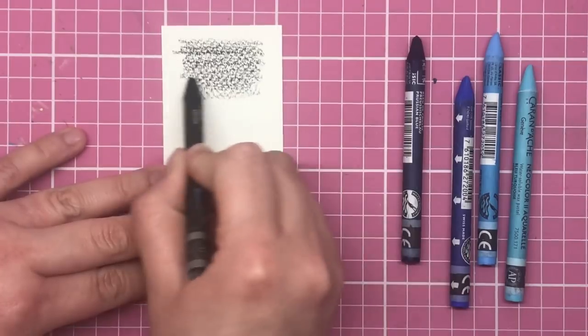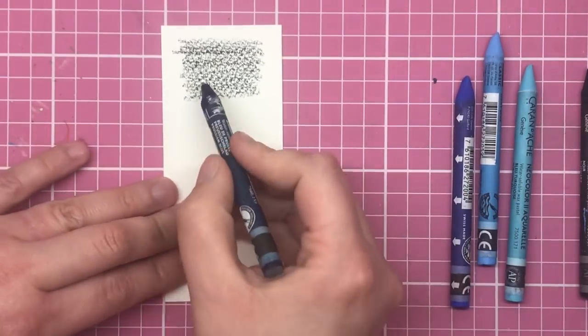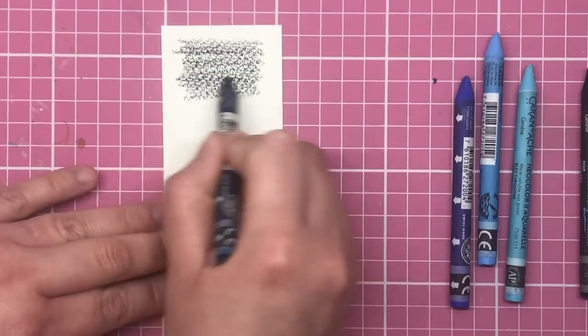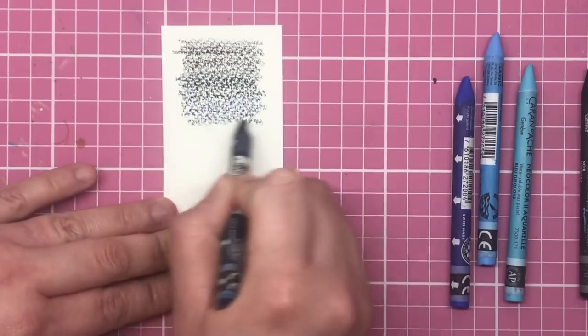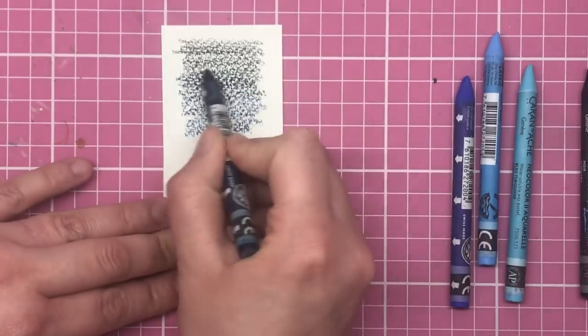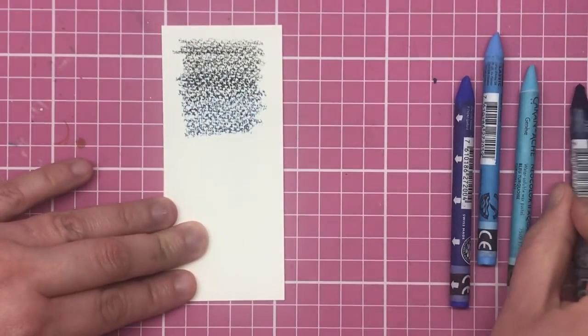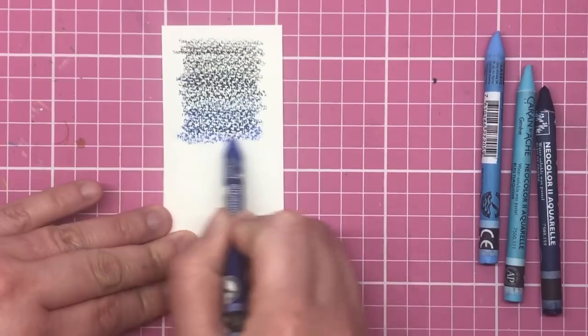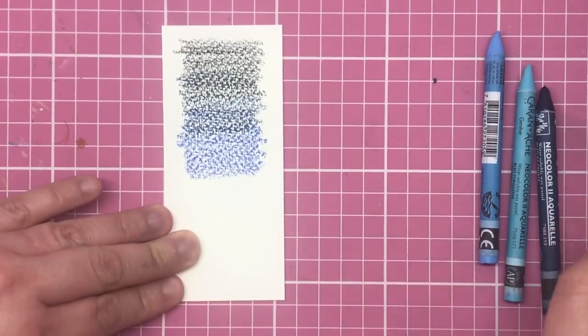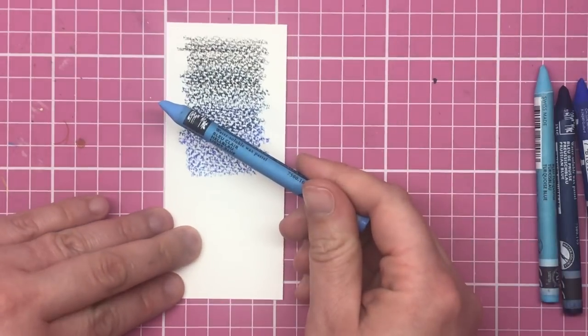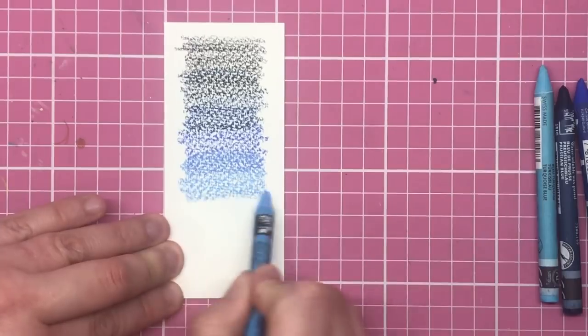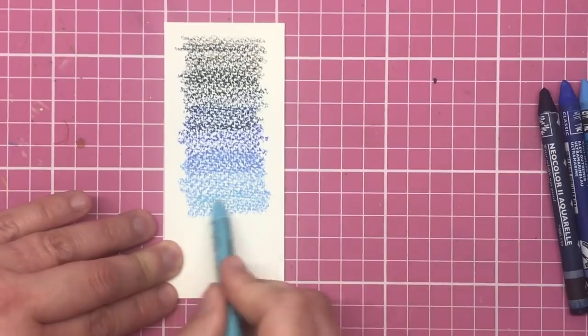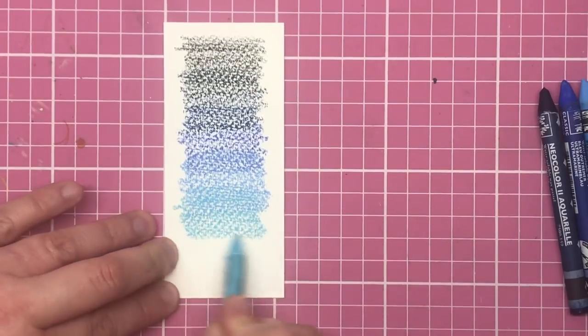I do a layer of black first of all at the top of the page, then move on to the next darkest color which is the Prussian blue and start from kind of the mid three-quarter point of the black and pop the Prussian blue on there. You're overlapping, that will help with the blend. Then the next color which is the ultramarine, exactly the same thing. Go about halfway three-quarters of the way into the previous color. Then the light blue, and the turquoise blue to finish.